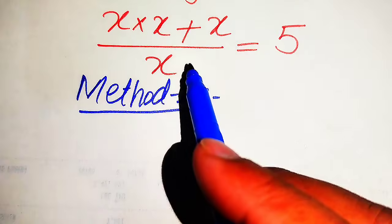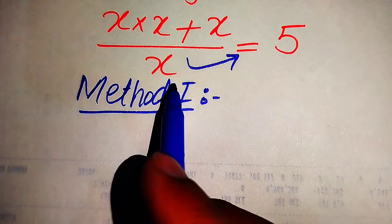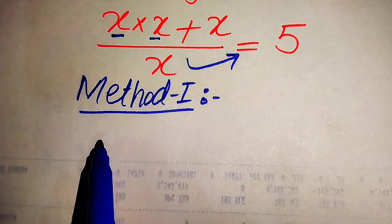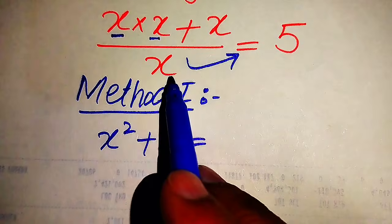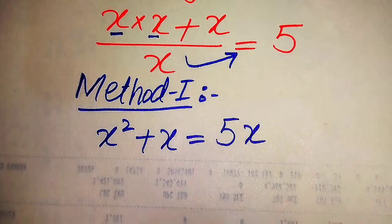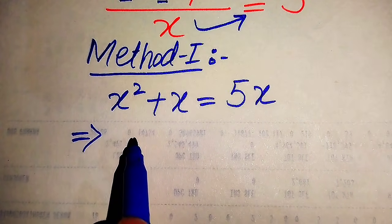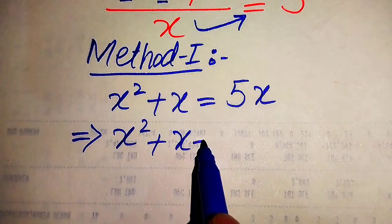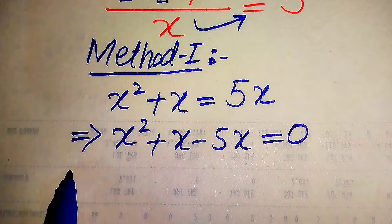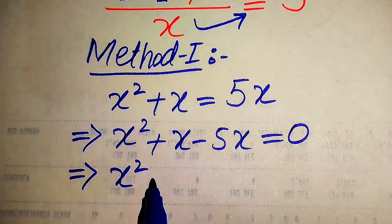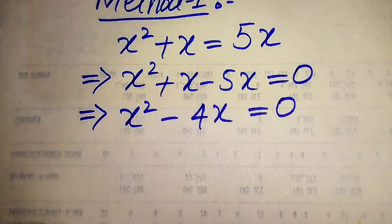In the first method, this x is divided on the left-hand side, and when we move it to the right-hand side it multiplies 5. So x times x is written as x squared, plus x equals 5x. We then move 5x from the right-hand side to the left-hand side, giving us x squared plus x minus 5x equals 0, and x minus 5x becomes negative 4x, so we have x squared minus 4x equals 0.